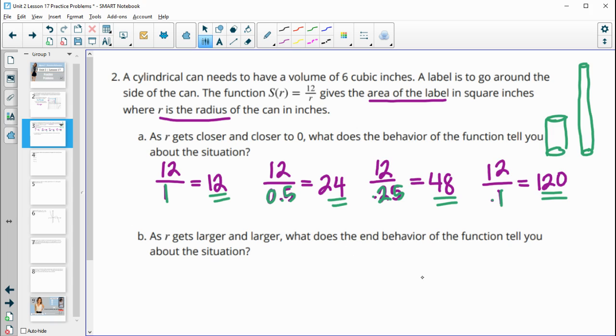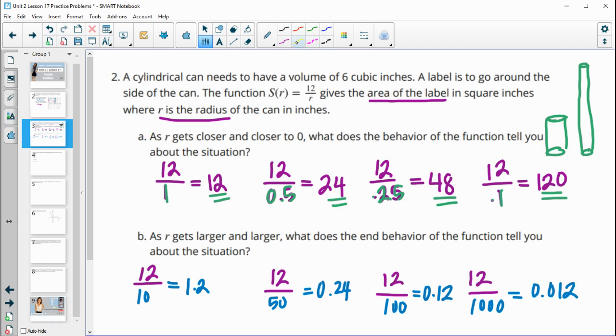So as R gets larger and larger, what does the end behavior function tell you about the situation? So now if we take and do 12 divided by radii that are getting larger and larger. So let's just start with a radius of 10. So 12 divided by 10 is giving us 1.2 or 12 divided by 50 is giving us 0.24 or 12 divided by 100 would give us 0.12 or 12 divided by a thousand would give us 0.012. And this is surface area. So as your radius is getting bigger, your surface area is getting smaller or the label is getting smaller.